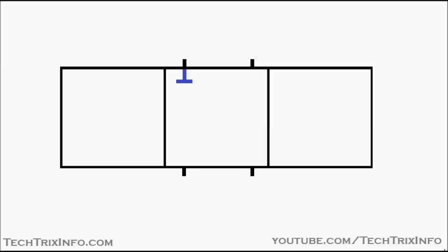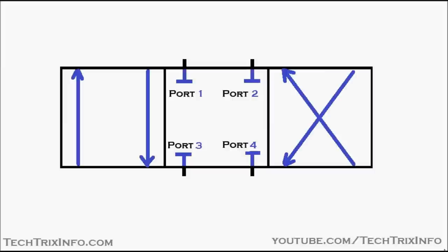Now let's look at the ports. In position two, you can see all four ports are blocked: port one, two, three, and four. In each position we have four ports — you can count one, two, three, four in each position.